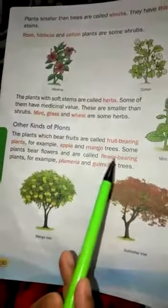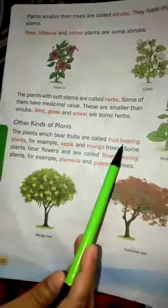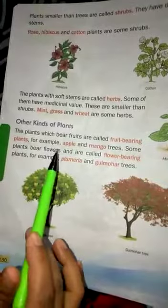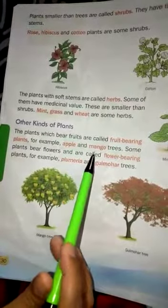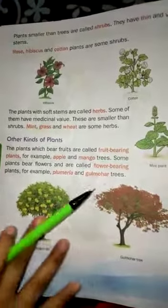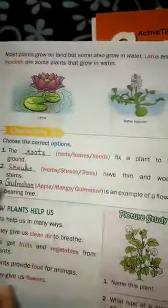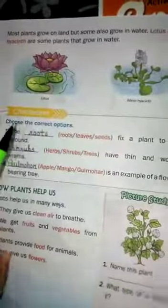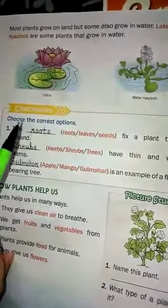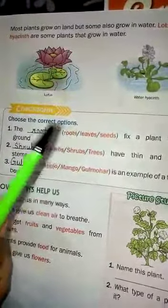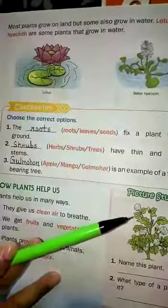The other kinds of plants are fruit-bearing plants and flower-bearing plants. Fruit-bearing plants means plants which bear fruits, and flower-bearing plants means plants which bear flowers. For example, apple and mango are fruit-bearing plants. And gulmohar, plumeria — these are flower-bearing plants. Now, most plants grow on land, but some also grow in water. Like lotus and water hyacinth — this type of plants grow in water also.